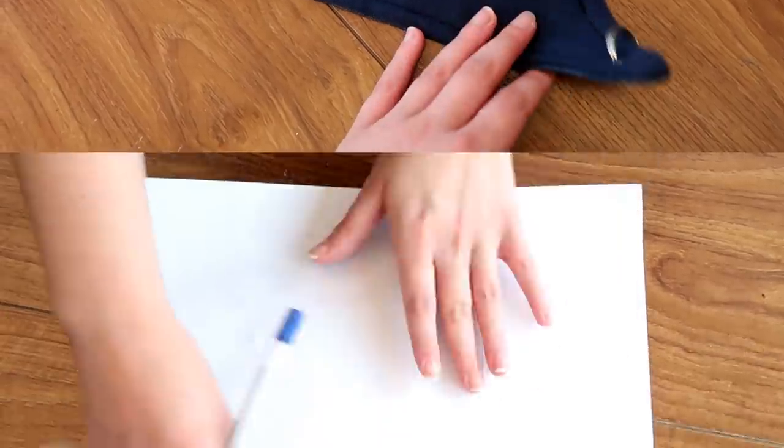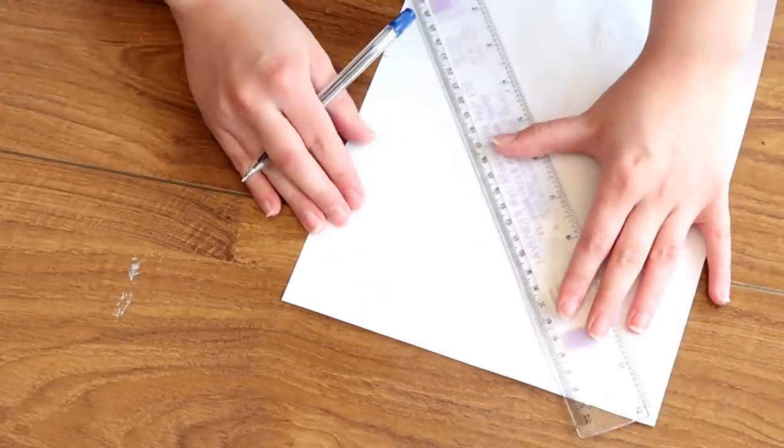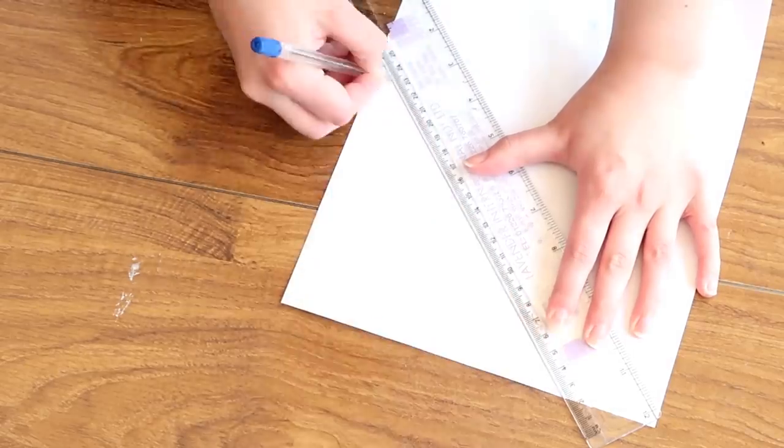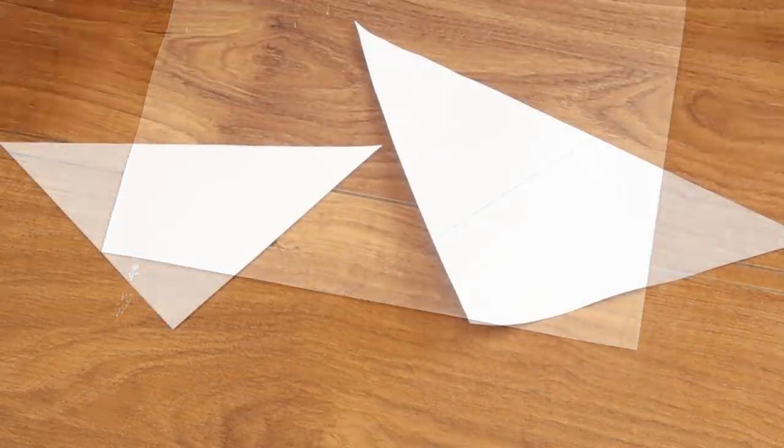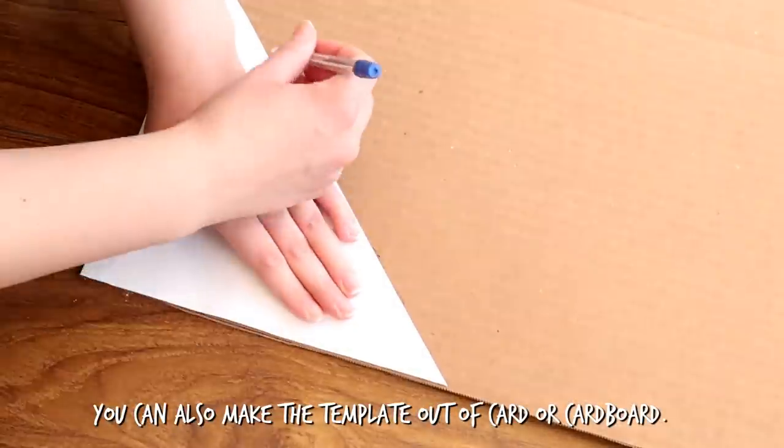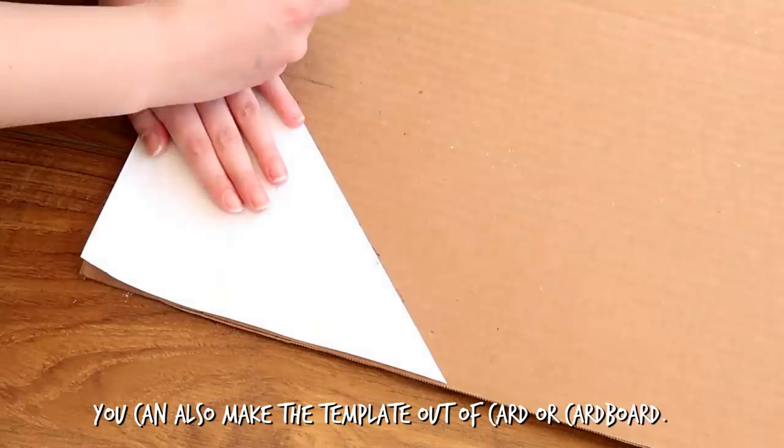But first let's start by making the template for a hammock. So you'll need a pen, paper and a ruler. Now you can do this as big or as small as you want, just make sure one side is a right angle so the corner of the hammock will fit nicely in the corner of your tank.